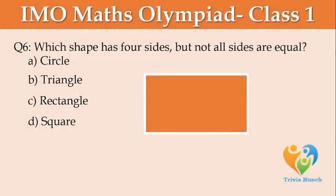Which shape has 4 sides but not all sides are equal? A: circle, B: triangle, C: rectangle, D: square.